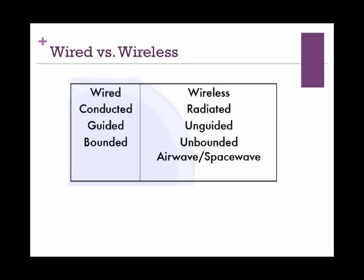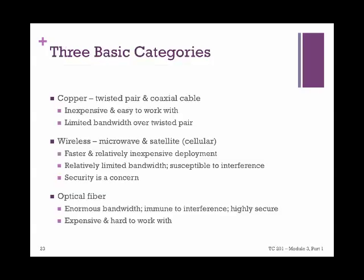When we have a closer look at the links or transmission channels more technically, we can see that they are in fact in three forms. They're either wires — regular copper wires or more fancy optical fibers — or they're completely free of wires. There are of course pros and cons associated with each of them.